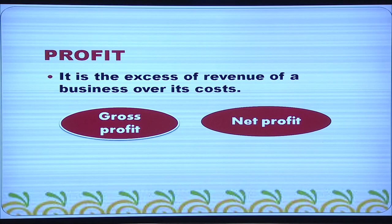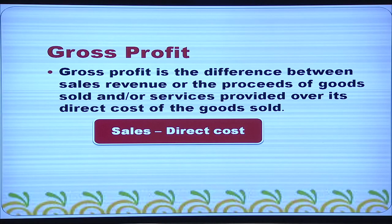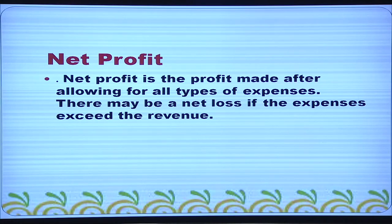Profit is the excess of revenue of a business over its cost. Profit can be gross profit or net profit. Sales minus direct cost will give you gross profit — it is the difference between sales revenue over the cost of goods sold. Net profit is the profit made after allowing all types of expenses. There may be a net loss if expenses exceed revenue. Gross profit minus indirect expenses gives you net profit.